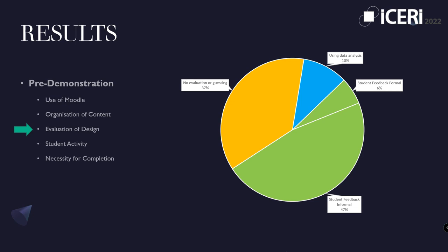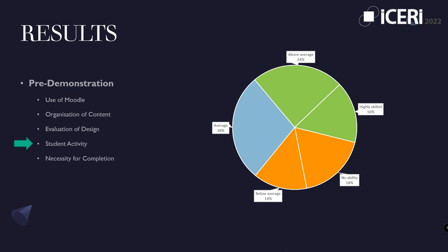To establish the skill level participants had in extracting VLE data, they were questioned about their effectiveness at retrieving information about a student's activity from Moodle. The results indicated that 32% were below average or without ability at retrieving data, 28% had an average level of ability, and 40% were above average or highly skilled. Given that only 10% of designers used data as a method of evaluation, it is proposed that a factor explaining this lack of data usage is the lack of ability to retrieve the data, with 60% rating themselves as having no ability to average ability.